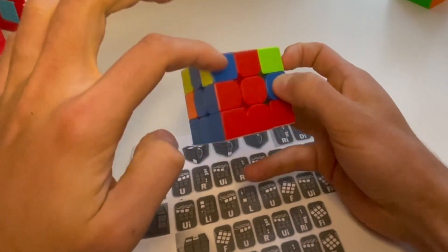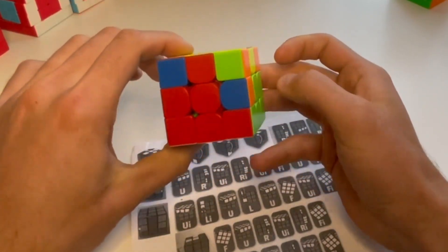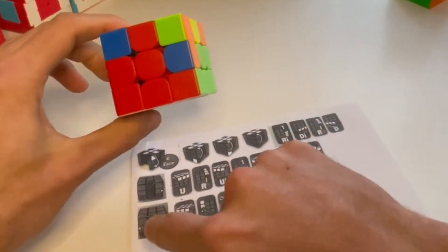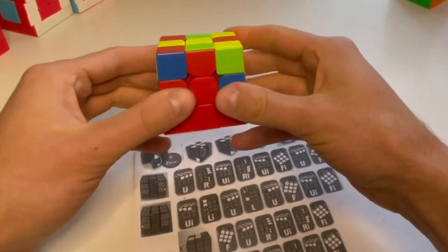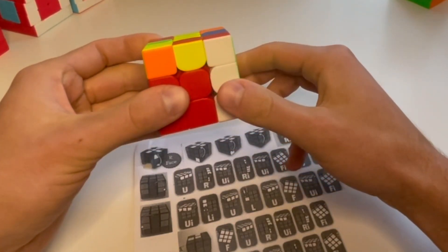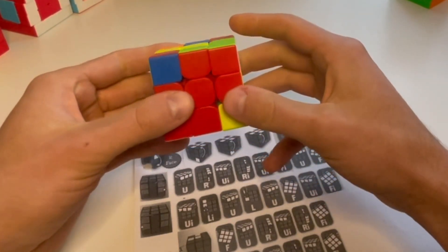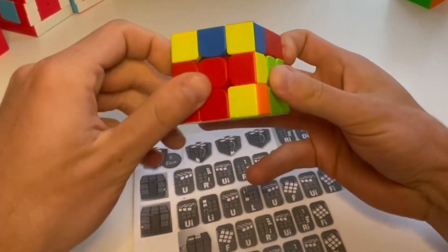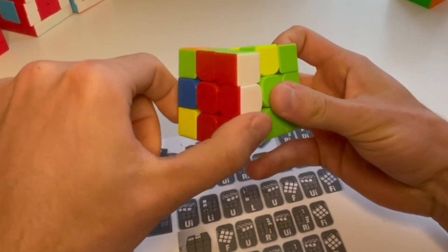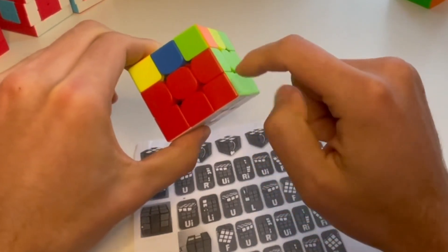Next, am I going to go to the left or to the right? I'm hoping you said to the right, we're going to follow our algorithm to the right. So up, right, up inverted, right inverted, matches them together. Up inverted, front inverted, up, front. And now that is in the correct spot.